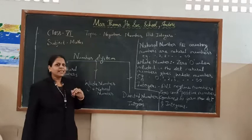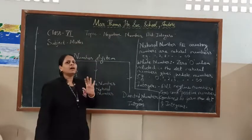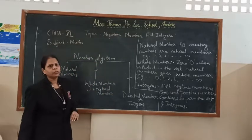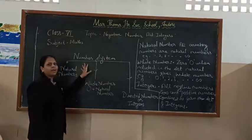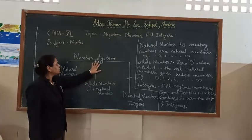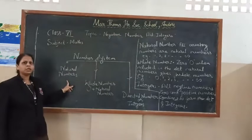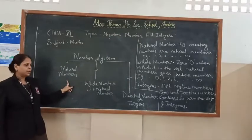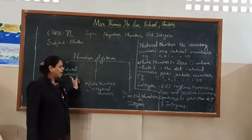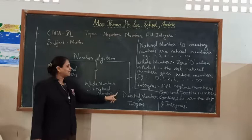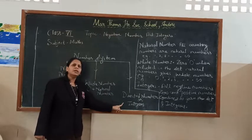We are covering three parts of the number system. We are dividing the number system into three parts. The first part is natural numbers, the second part is whole numbers, and the third part is directed numbers, or integers.